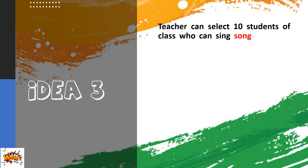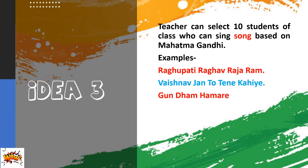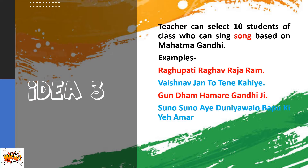Idea three: The teacher can select 10 students of the class who can sing songs based on Mahatma Gandhi, like 'Raghupati Raghav Raja Ram' and 'Vaishnav Jan To Tene Kahiye,' and so on. Let's see one example of how they can perform this activity.